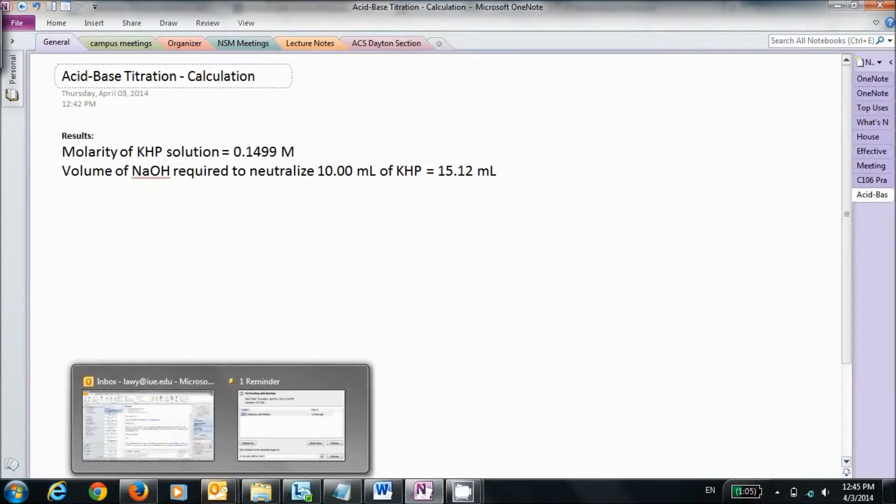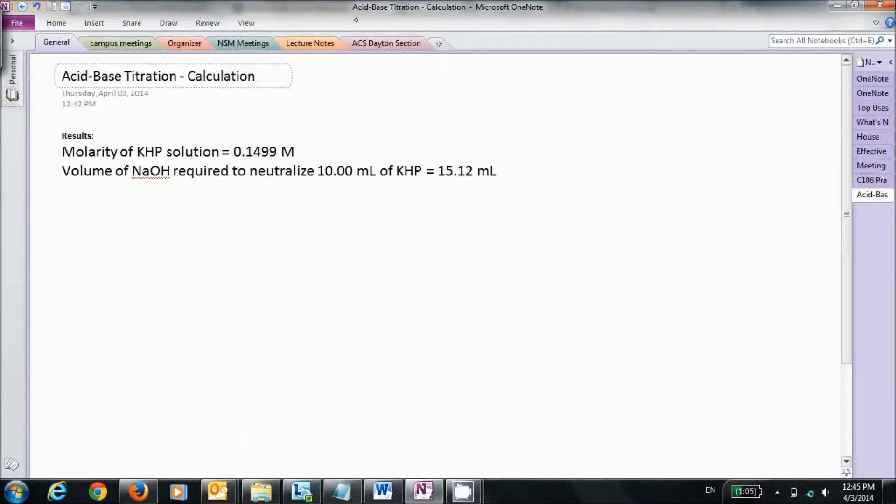Now let us figure out the molarity of the sodium hydroxide that we have, given the molarity of the KHP solution, which is 0.1499 molar, and the volume required to neutralize 10.00 milliliters of KHP, which is 15.12 milliliters of NaOH.